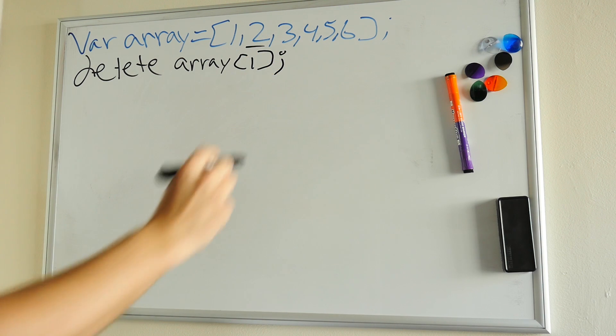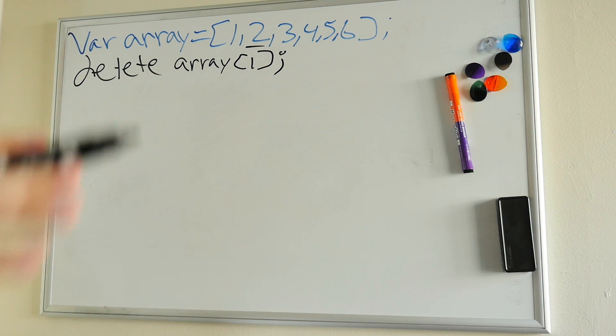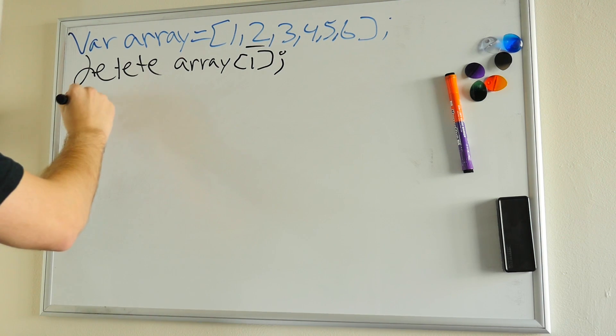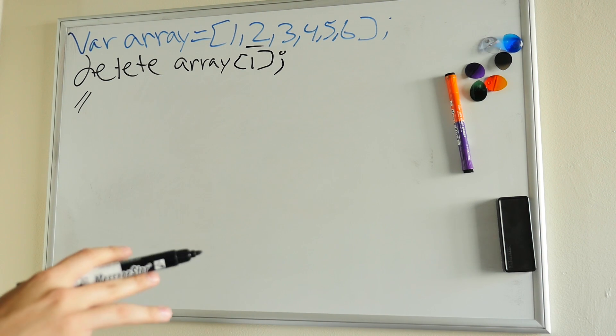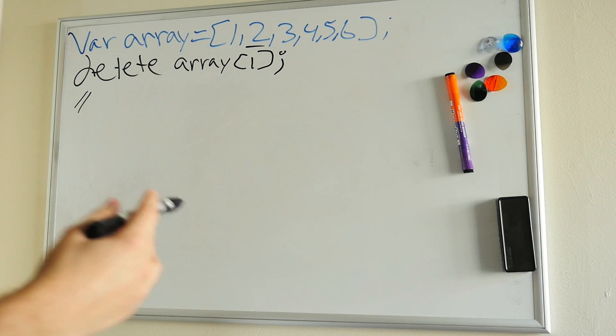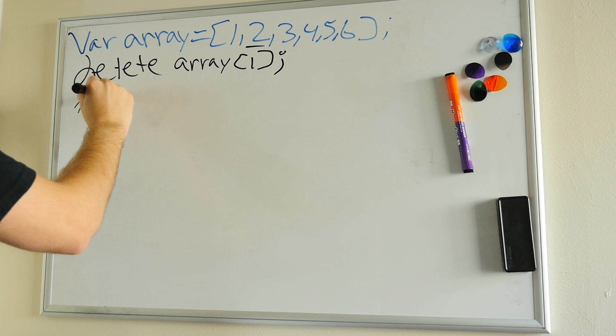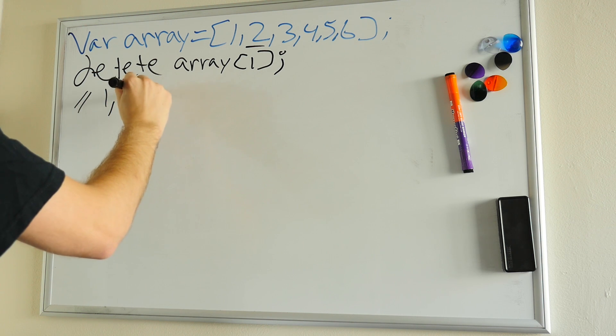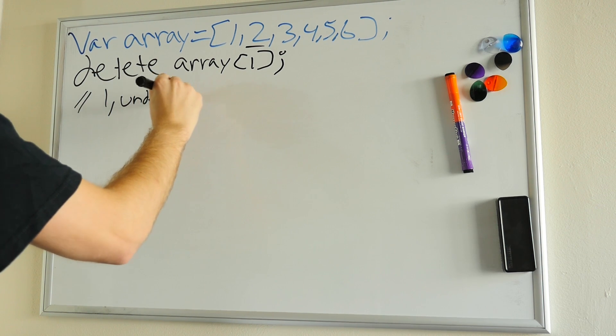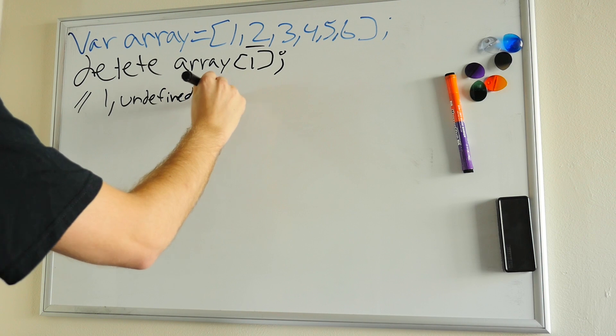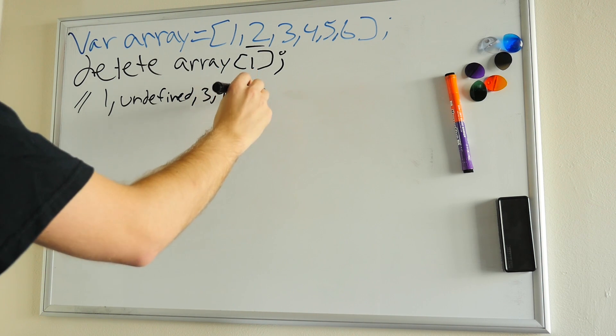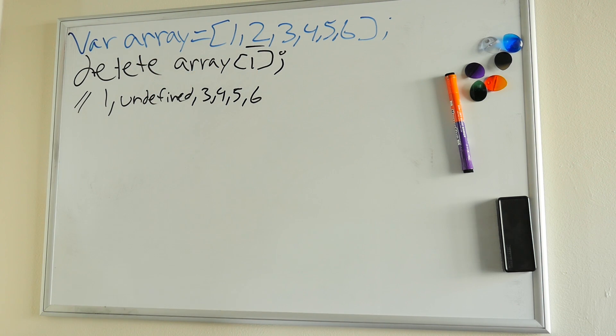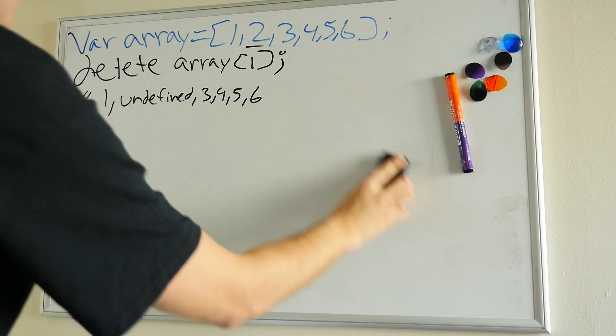So this will actually delete the 2, but it'll also leave undefined. So now our output right here will just have an empty space. Now that's okay if that's what you're looking to do. In my experience, that's typically not what I'm looking to do. So just to clear that up, we're going to have 1, undefined, and then we're going to have our 3, 4, 5, and 6. So that's what our array would look like at that point.